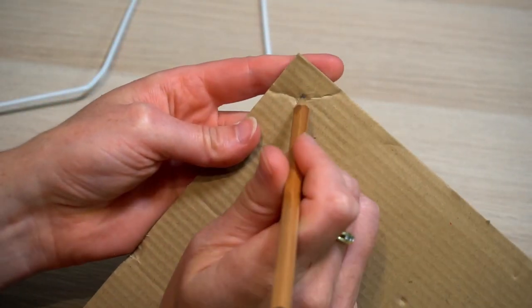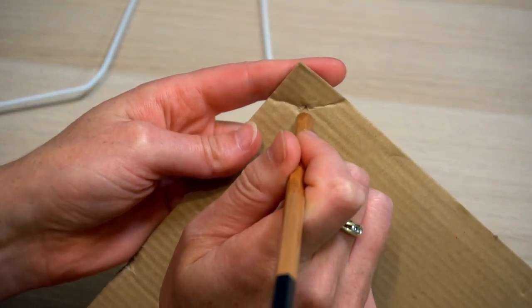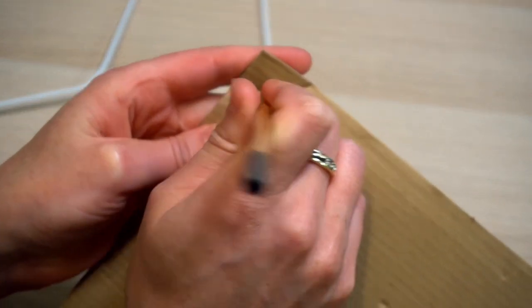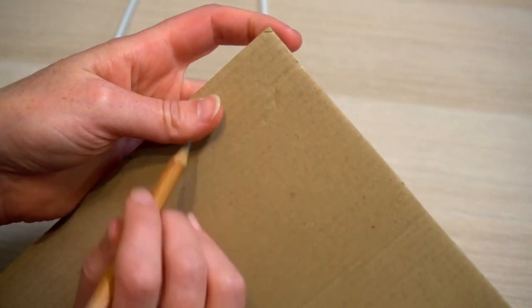Next we take something sharp, watch our fingers, and poke a hole through the cardboard on all four corners. Not too far into the corner, but enough so that you don't get it tearing.